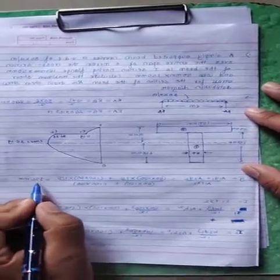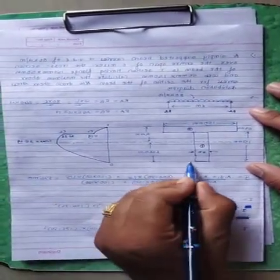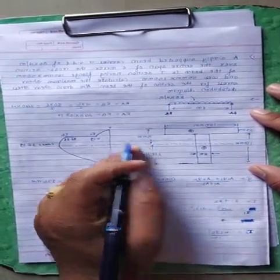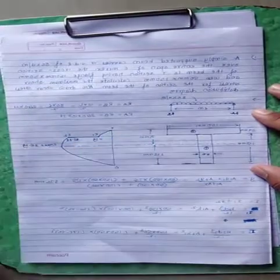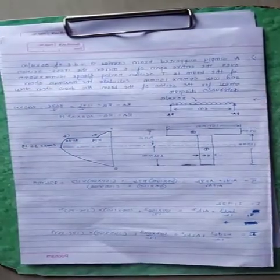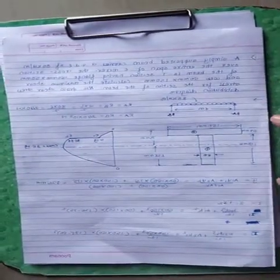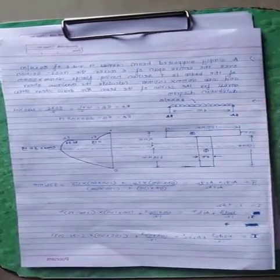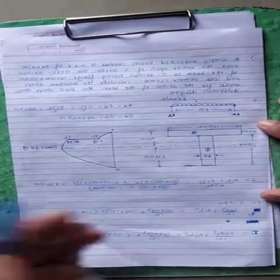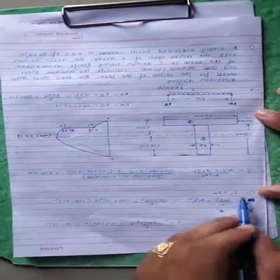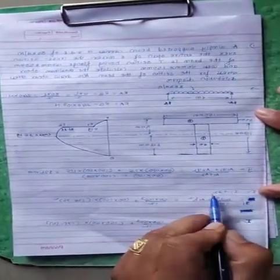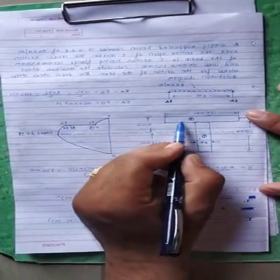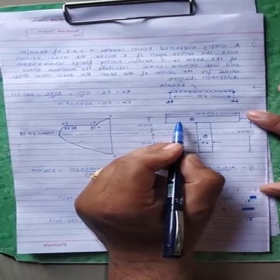ȳ comes out to 125 mm from the bottom surface, or equivalently 75 mm from the top. Next, we find the moment of inertia of the total T section: I equals I1 plus I2, where I1 is the moment of inertia of section 1 and I2 is the moment of inertia of section 2.